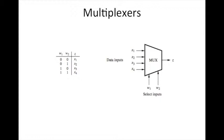On the left we can see a truth table which summarizes the output value z given the input values for w1 and w2. We can see that when w1 and w2 are both 0 we will get x1, when they are 0 and 1 we'll get x2, 1 and 0 we'll get x3, 1 and 1 we'll get x4.